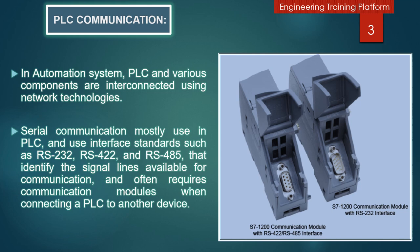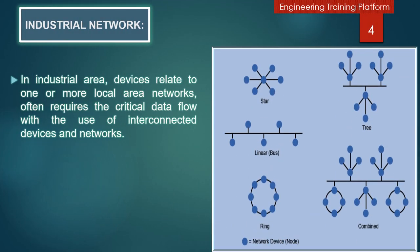A PLC uses serial communication with a variety of devices such as personal computers, printers, scanners, and so on. Serial communication uses interface standards such as RS-232, RS-422, and RS-485, which identify the signal lines available for communication. All three interface types can be used for point-to-point communication. RS-422 and RS-485 can also be used for multiple devices connected on the same signal line. Connecting a PLC to another device via RS-232, RS-422, or RS-485 often requires a communication module.